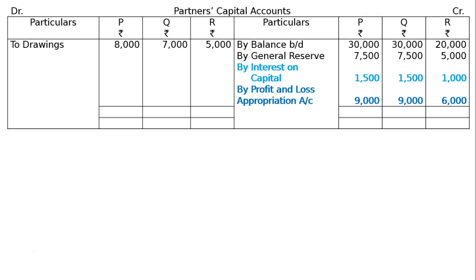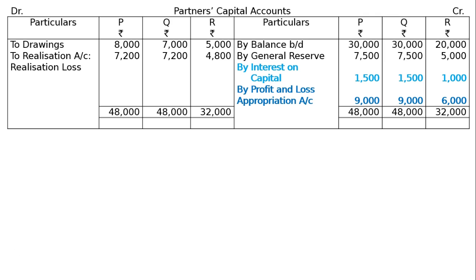Debit side of capital accounts — to drawings: P Rs. 8,000, Q Rs. 7,000, R Rs. 5,000. To realization account for realization loss: P Rs. 7,200, Q Rs. 7,200, R Rs. 4,800. Credit side totals: P Rs. 48,000, Q Rs. 48,000, R Rs. 32,000. Taking to the debit side and finding the gap — to cash account: P Rs. 32,800, Q Rs. 33,800, R Rs. 22,200.